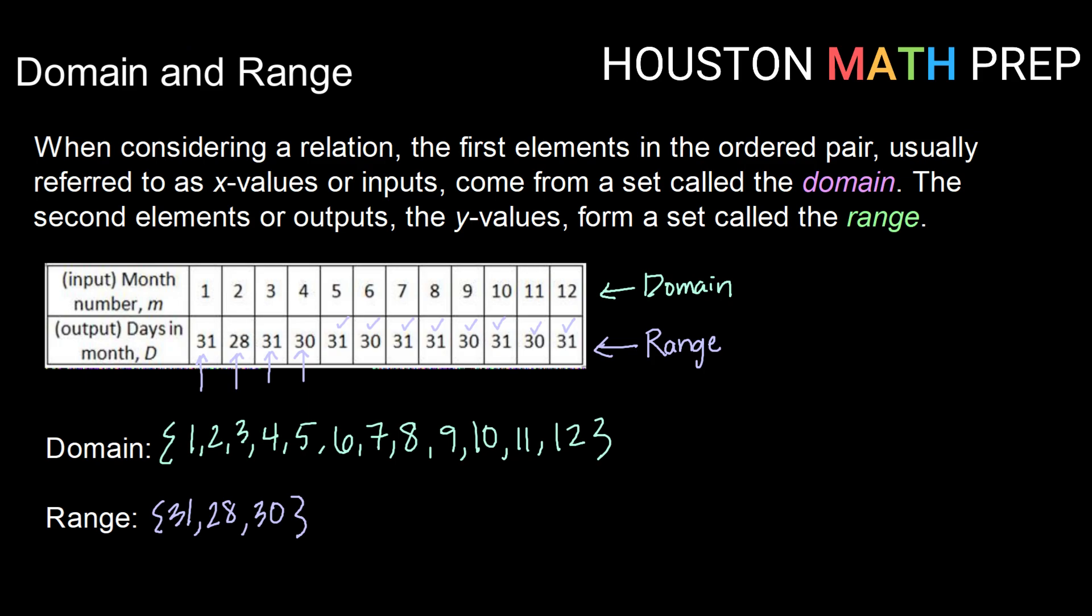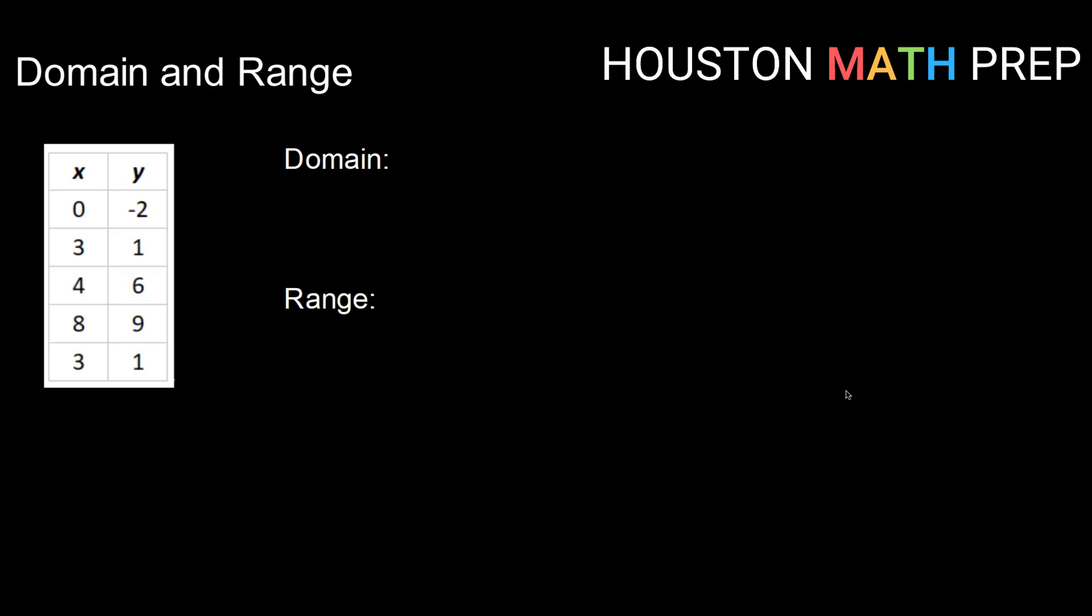Okay, so let's check another example. Once again, we have our values in our relation given to us in a table. So for our domain, we're going to do the same thing we did before. We're going to list out all of the x values, leaving off anything that repeats.